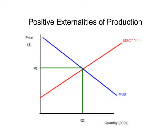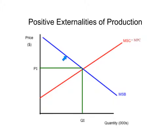So the positive externality of production curve looks like this. When it's production, you need to know that whether it's a negative or positive externality of production, what is going to shift is the old supply curve — which is the marginal social cost curve and the marginal private cost curve. When you have production, it's the old supply curve that shifts. When you have consumption, it's the old demand curve, which is called the marginal social benefit and the marginal private benefit curve.